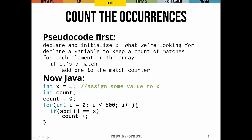You can see my pseudocode and my Java code here. Well, we want to declare and initialize x. x is what we're looking for. We want to declare a variable that keeps count of how many matches we found. And for each element in the array, we basically just want to check, hey, is this a match? And if it is, we add one to our counter for the matches.